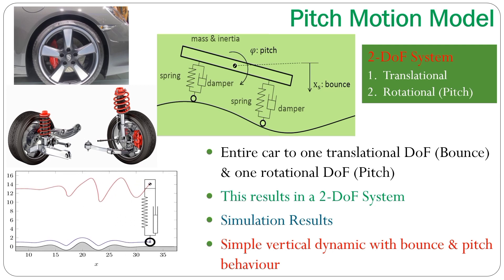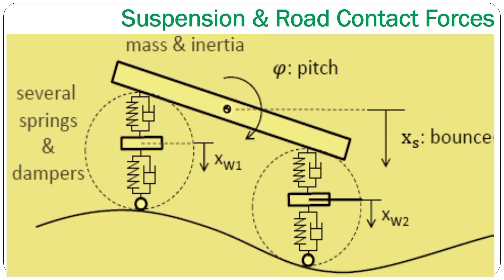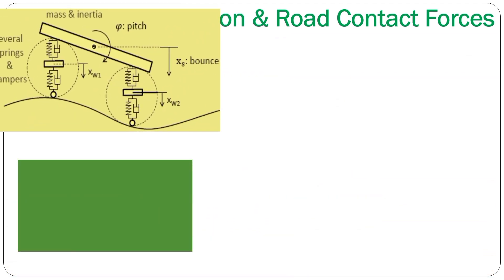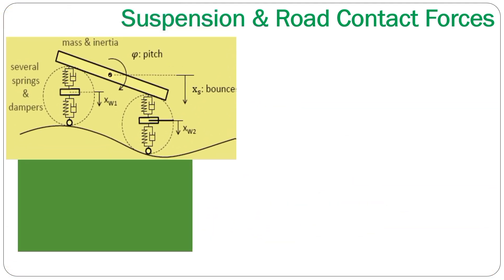Knowing that we have a matured bounce and pitch behavior dynamics as the basis, we may further incorporate the effects of suspension and road contact forces. We can now ask another question and that is how to simulate both suspension forces and road contact forces. To do that we start with the system that we had previously. If we look at this picture, we still have mass and inertia of the body of the car, but we have now several springs and dampers that we need to model this system.